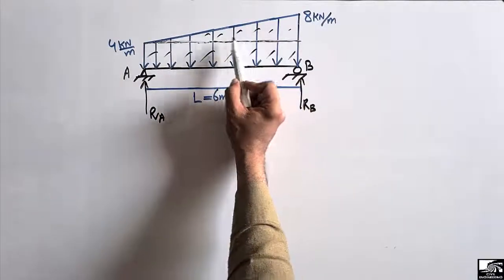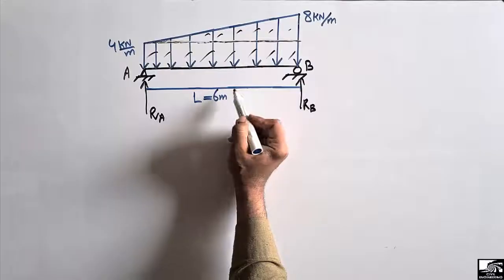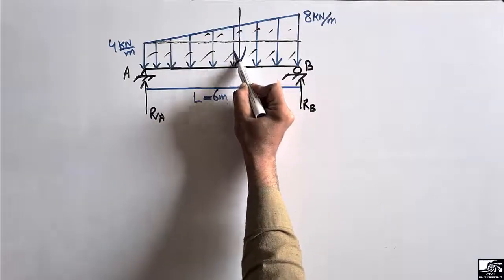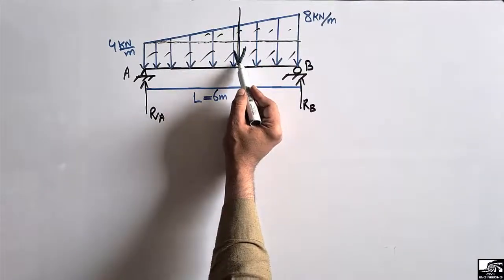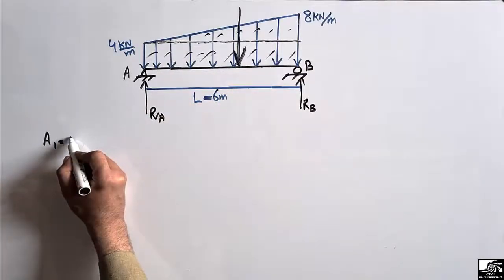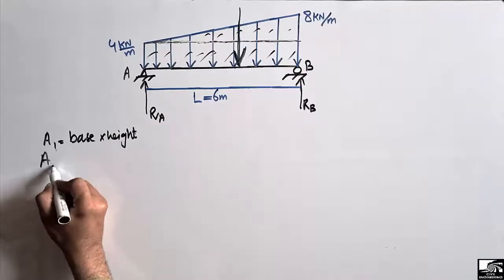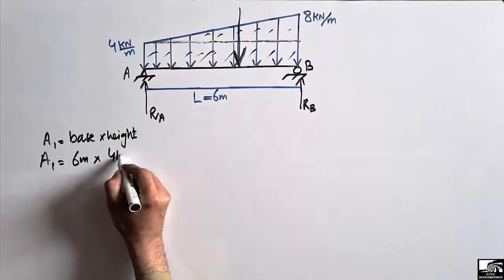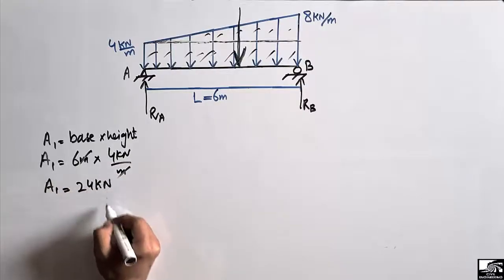First we find out the rectangle load, then the triangle load, and add them to find the total concentrated load. The concentrated load will act at the centroid. For the rectangle, the area A1 equals base times height: 6 m × 4 kN/m = 24 kN.